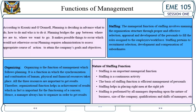Planning requires administration to assess the appropriate course of action to attain the company's goals and objectives. Organizing is the function of management which follows planning. It is a function in which the synchronization and combination of human, physical, and financial resources takes place. All three resources are important to get results — organizational function helps in achievement of results, which is important for the functioning of a concern.